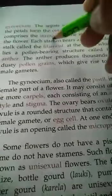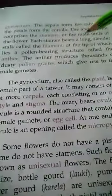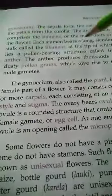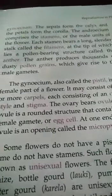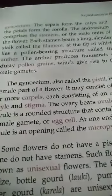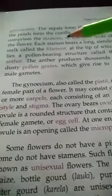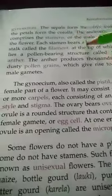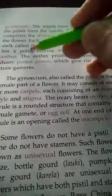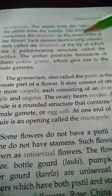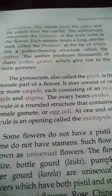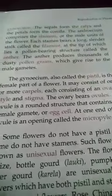The Androecium comprises the stamens, which is the male unit of the flower. Each stamen bears a long slender stalk called the filament, at the tip of which lies a pollen-bearing structure called the anther.